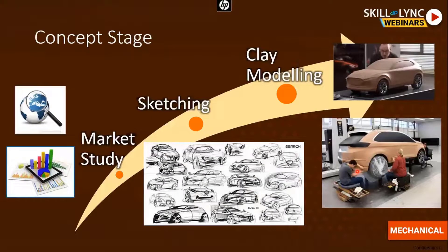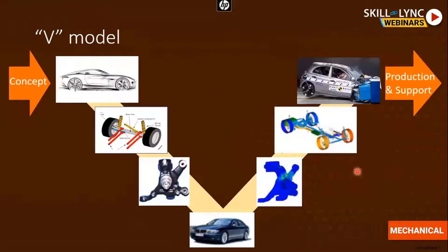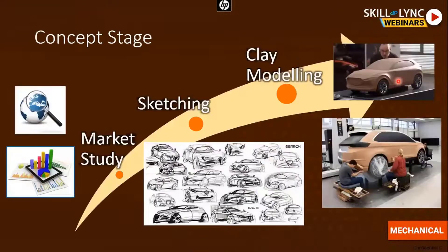Coming into the different steps of automobile development, we have the concept stage, the design and development stage (the V model), and finally the production stage. We will see these three stages individually in the coming slides.